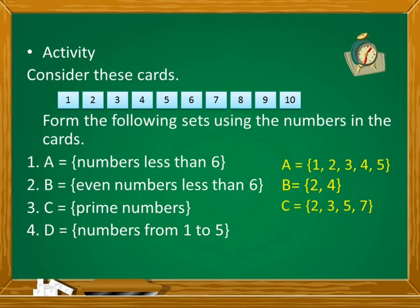These are the only prime numbers in this set of cards. When we say prime numbers, their only factors are 1 and itself. And take note, 1 is not a prime number. Number 4, set D is equal to a set with elements 1, 2, 3, 4, and 5 — from 1 to 5.